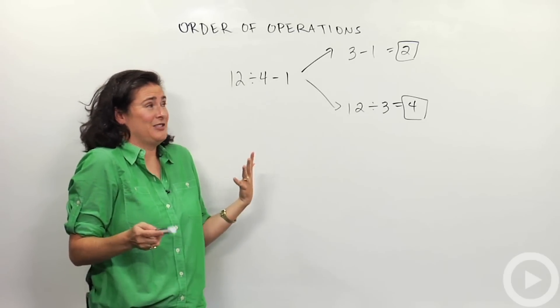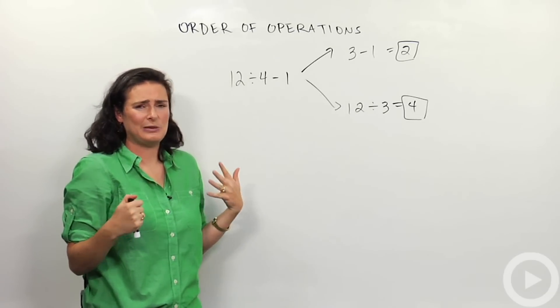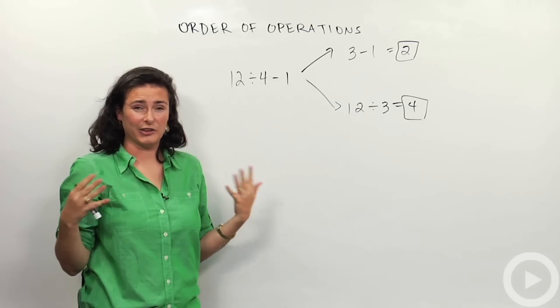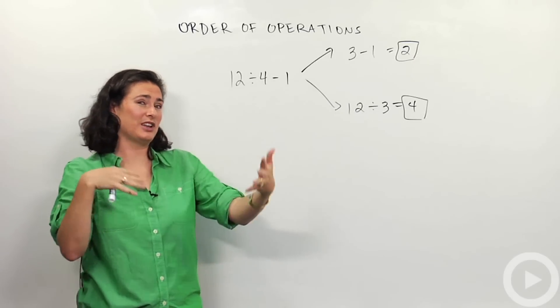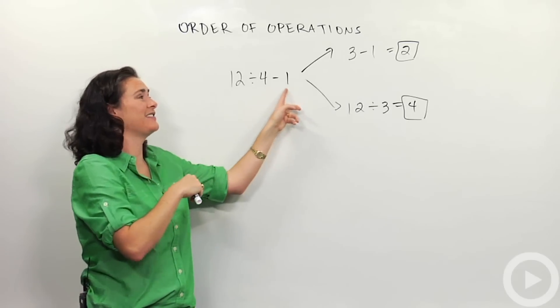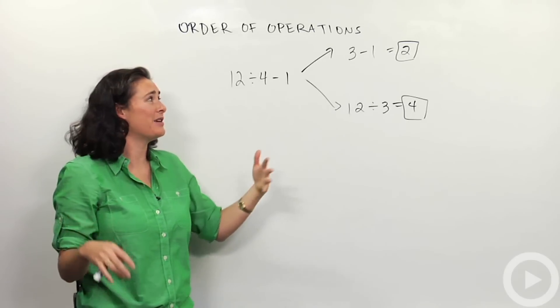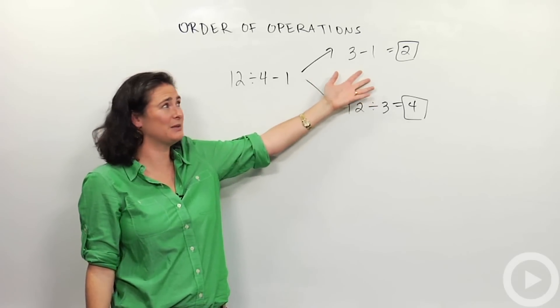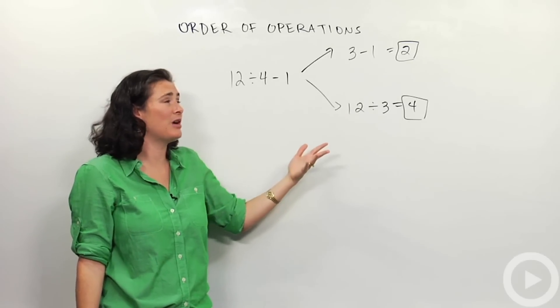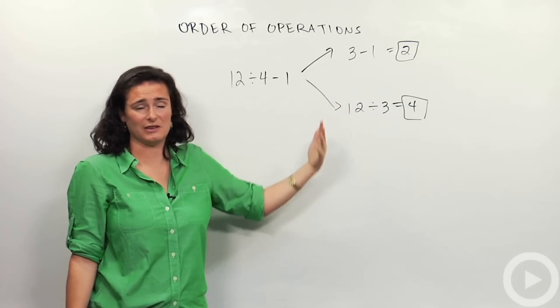What do you think of that? Does that make you nervous? It makes me nervous. It's supposed to be a way that we can all agree in math. It's supposed to be like a communication where if I write this down, it should mean the same thing to everybody. But here we have two pretty plausible ways of solving this problem and we get different answers. 4 and 2 are totally different.